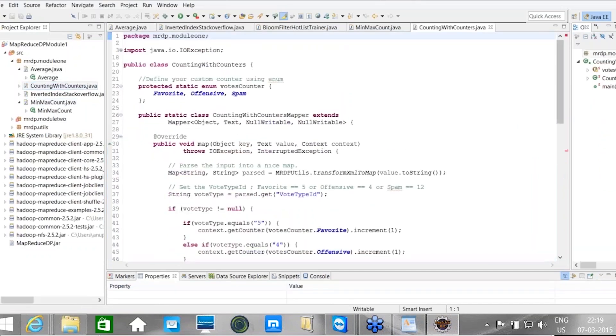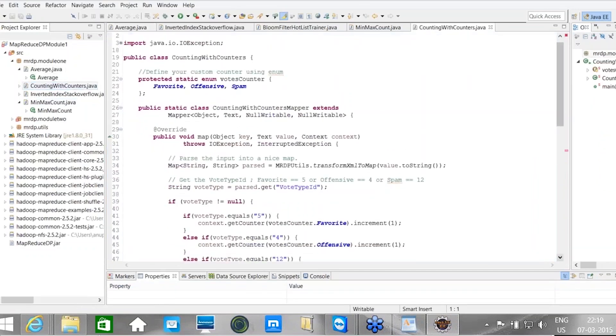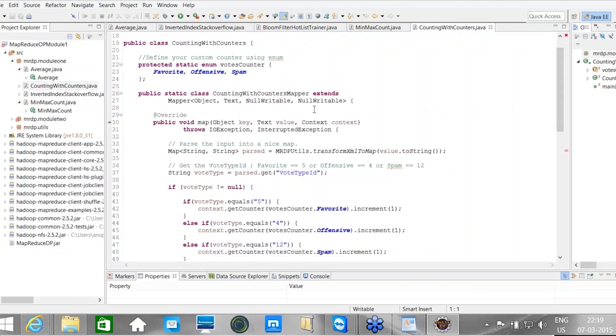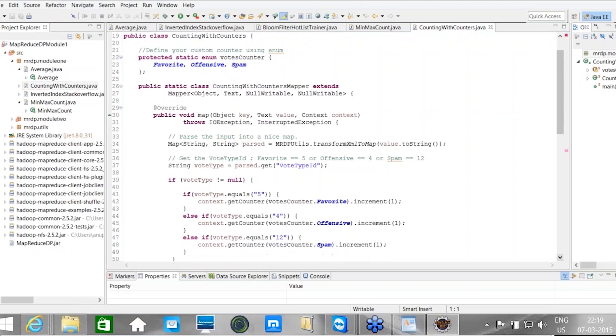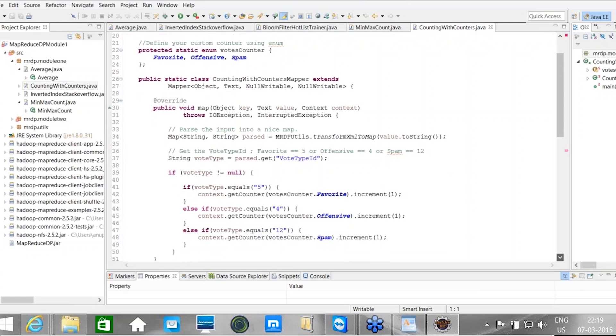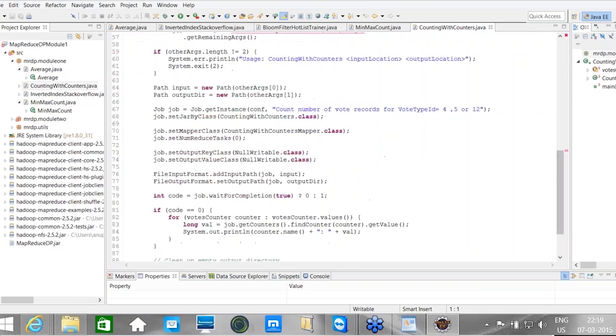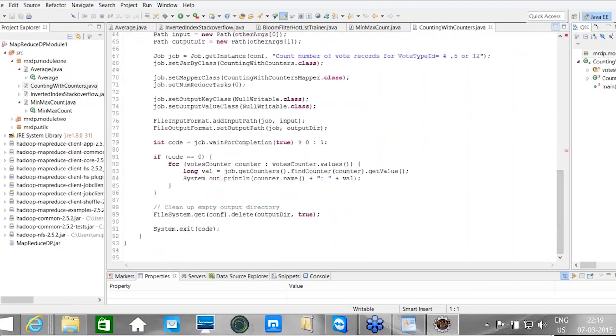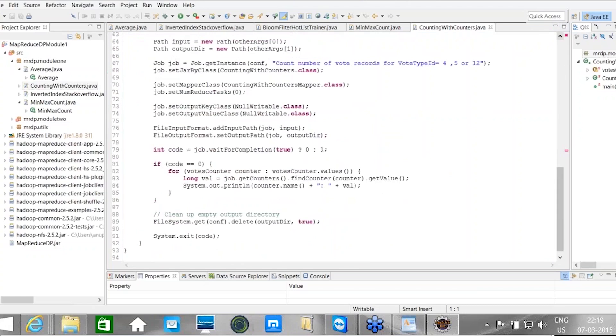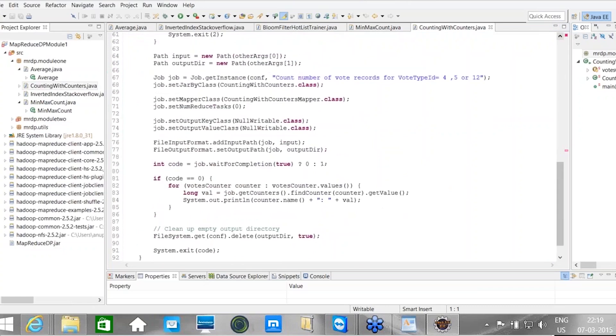The program in the mapper is very simple. What you do is you read your records, and if you see that you have one of these values in the vote ID type, then you increment the corresponding counter. Framework will do rest of the things for you.